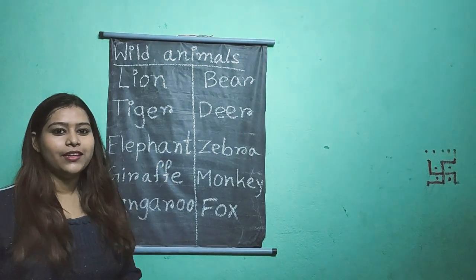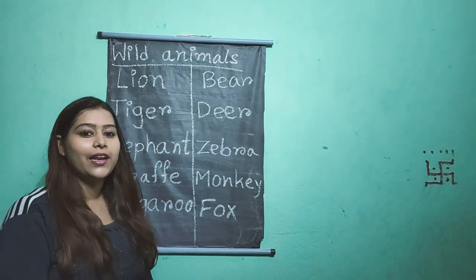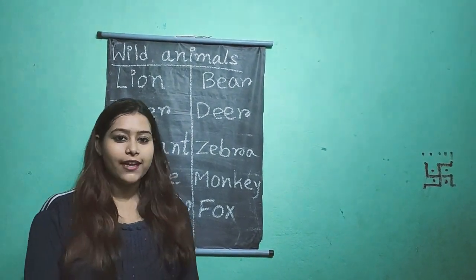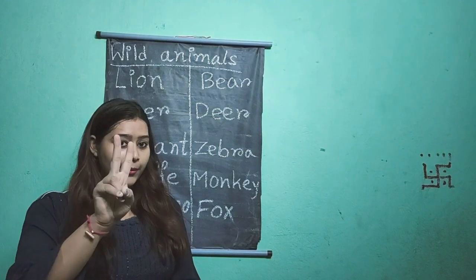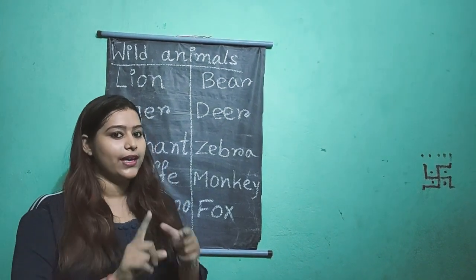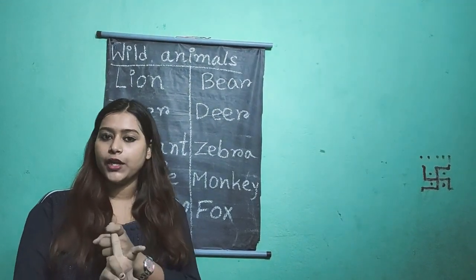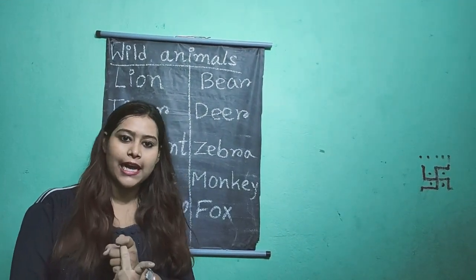Hello everyone. Today we will learn about animals. There are two types of animals. One is wild animals. Second is pet or domestic animals.